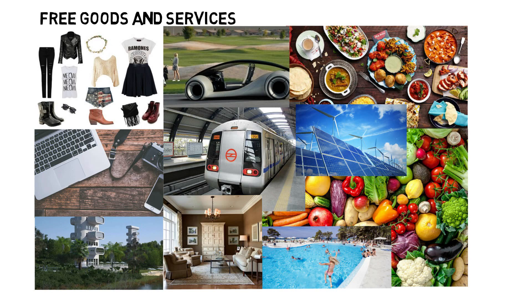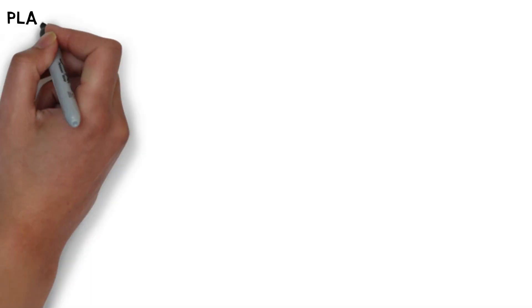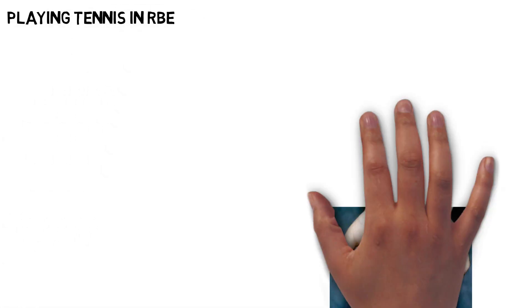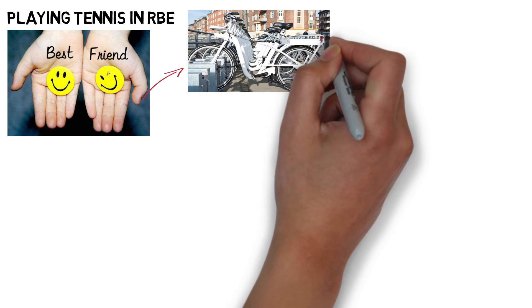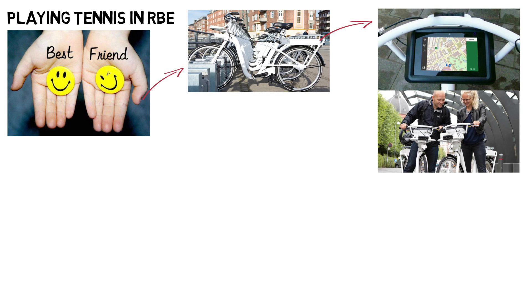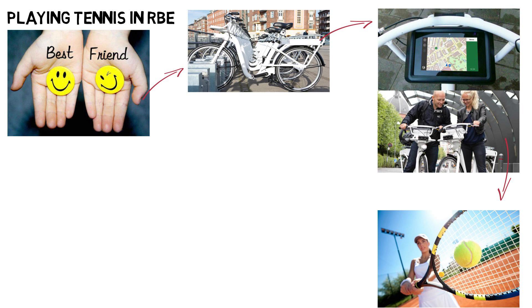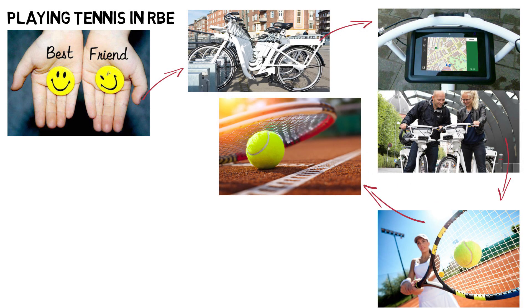We can think of an RBE as a big public library of goods and services. Let's imagine for a moment that you live in an RBE, and you meet with your friend and spontaneously decide to play tennis together. The weather is good, so you decide to lend a bike from the nearest bike station. You bike to the Tennis Club facility, where you return the bikes to another bike station. Tennis rackets and balls are freely available at the facility. You have a lot of fun with your friend, and when you stop playing, you return the rackets and balls back to the facility.